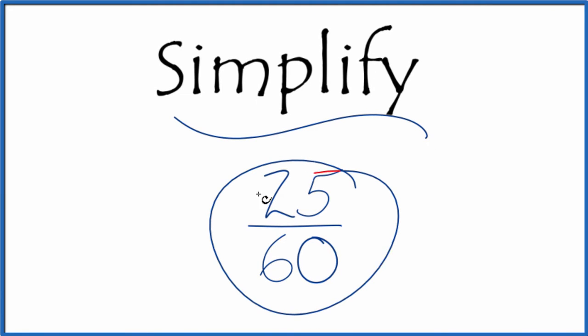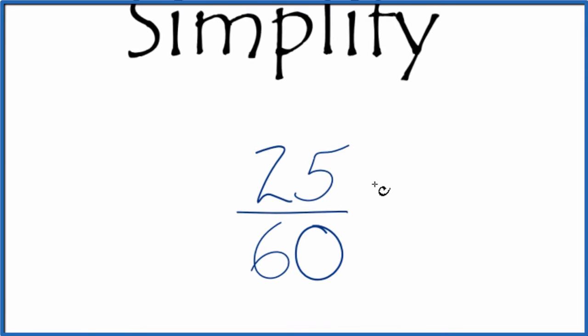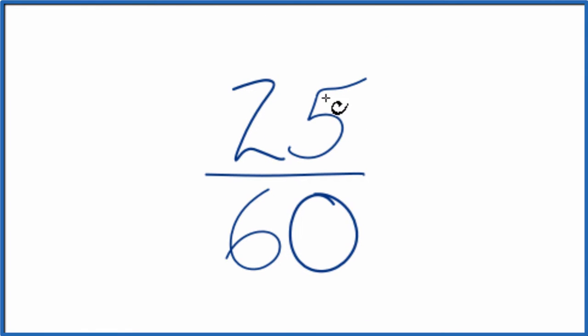Let's simplify the fraction 25/60. Here's how we do it. We want to find another fraction that's equivalent, has the same value as 25 divided by 60, just that it's in lowest terms.